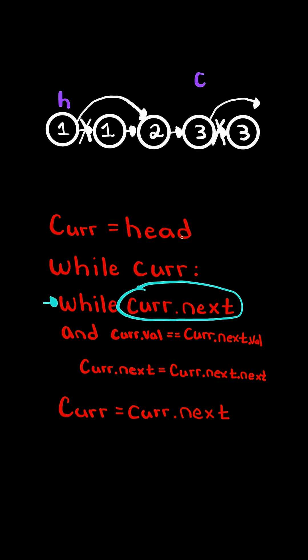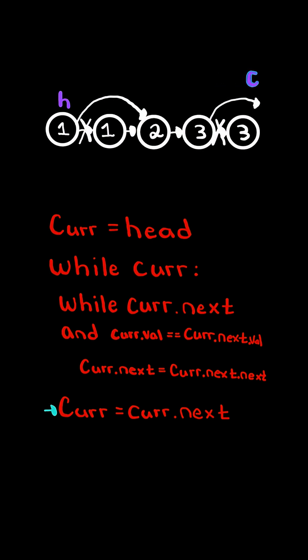When we check the condition for the inner loop again, current.next is null, so we exit the inner loop and update current equal to current.next. Now when we check the outer loop, current is null, so we exit the whole loop. Notice we removed all the duplicates along this linked list.